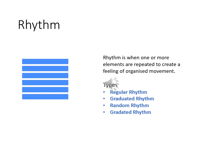The second principle of design is rhythm — when we repeat one or more elements to create a feeling of organized movement. I have been telling you to create a flow and dynamism in your compositions; rhythm is how you achieve this. There are four types of rhythm: regular, graduated, random, and gradated.